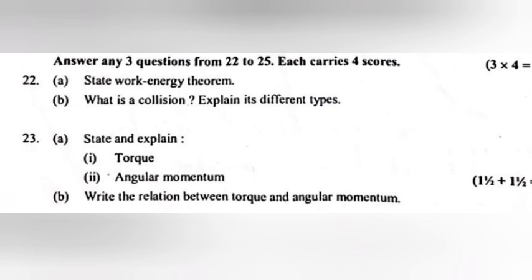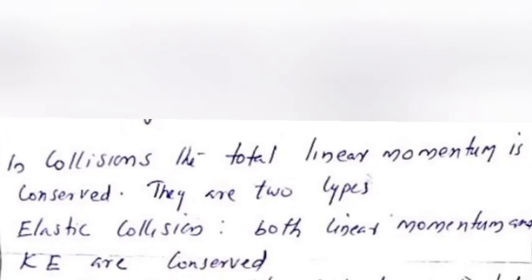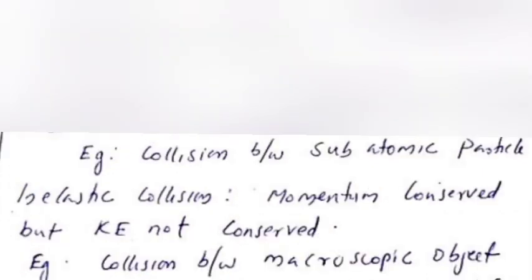Question 22A: State work energy theorem. Answer: The work done by the net force on a body is equal to the change in kinetic energy. 22B: What is a collision? Explain its different types. Answer: In collisions, the total linear momentum is conserved. There are two types. Elastic collision: Both linear momentum and kinetic energy are conserved. Example: Collision between subatomic particles. Inelastic collision: Momentum conserved but kinetic energy not conserved. Example: Collision between macroscopic objects.